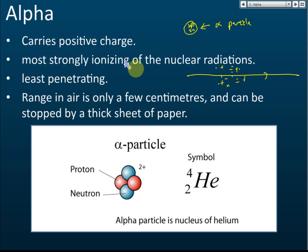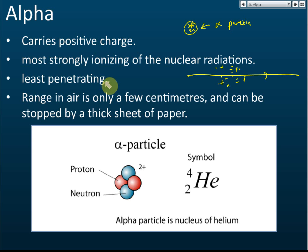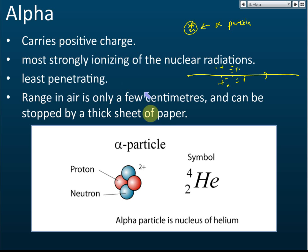Although alpha has the strongest ionizing power, it is the least penetrating of the three emissions. Its range in air is only a few centimeters, and it can be stopped by just a thick sheet of paper — even a single piece of paper is enough to block it. So alpha has very low penetrating power but very high ionizing power, and it carries a positive charge.